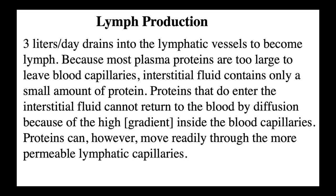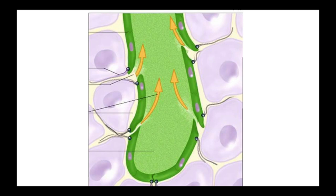Three liters of plasma a day drains into these lymphatic vessels to become lymph. Because most plasma proteins are too large to leave blood capillaries in the first place, interstitial fluid contains only a small amount of proteins. Proteins that do enter the interstitial fluid cannot return to the blood by diffusion because of the high concentration gradient inside the blood capillaries. Proteins can, however, move readily through the more permeable lymphatic capillaries — lymph continues to move in the correct direction.